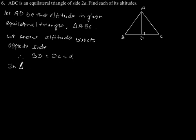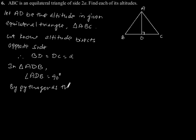Now, in triangle ADB, angle ADB is equal to 90 degrees. By Pythagoras theorem, we will get AD squared plus DB squared is equal to AB squared.